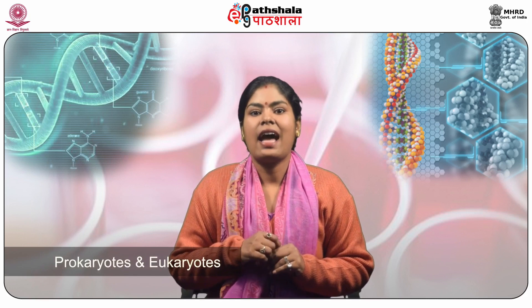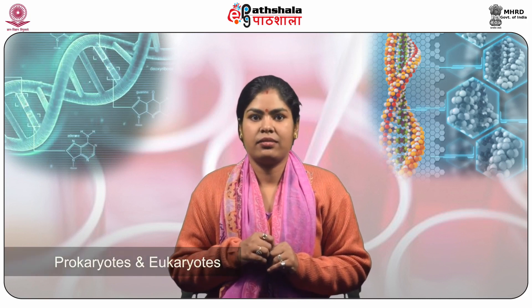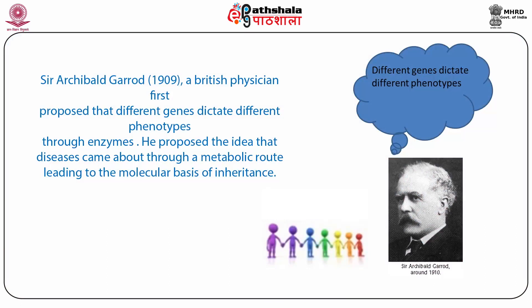The start codon AUG and stop codons UAA, UAG and UGA are the same for both prokaryotes and eukaryotes. Sir Archibald Garrod in 1909, a British physician, first proposed that different genes dictate different phenotypes through enzymes.